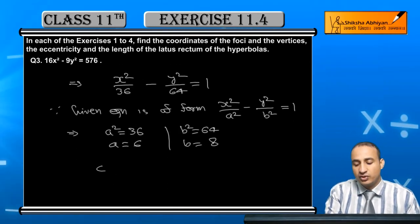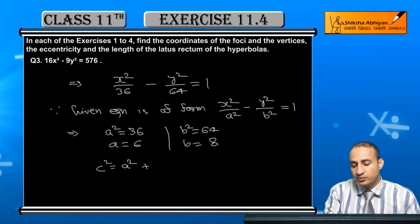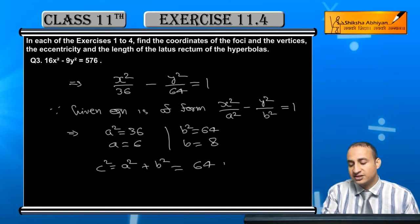Similarly, c² is nothing but a² + b², that is 36 + 64 equal to 100, or c = 10.